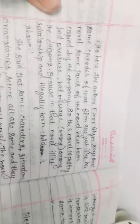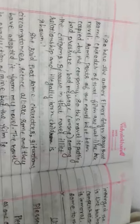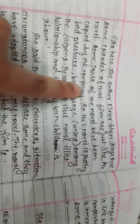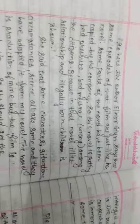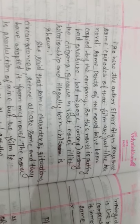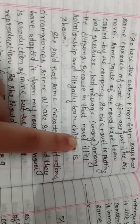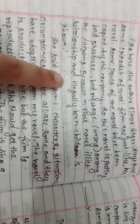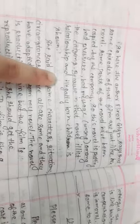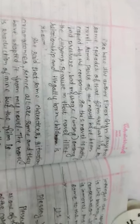The author Eleanor Glenn says that some episodes of that film are just like her novel. Some parts of the novel have been copied by the company. This company is putting a bad message among the citizens because that novel shows an illicit relationship and an illegally born child.